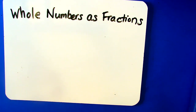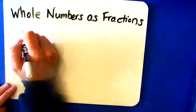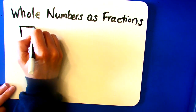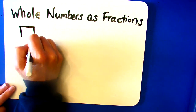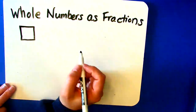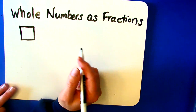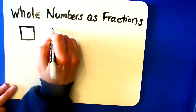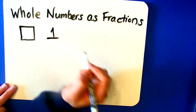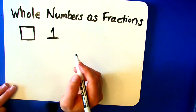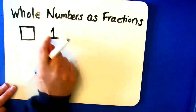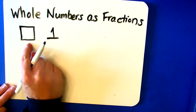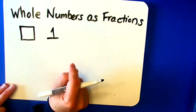So I'm just going to draw a figure here. I'm going to make it a square. I have one square here. So this is the whole number one. And by whole number, I mean no parts. There's no fraction here. This is a whole number. I have one square.